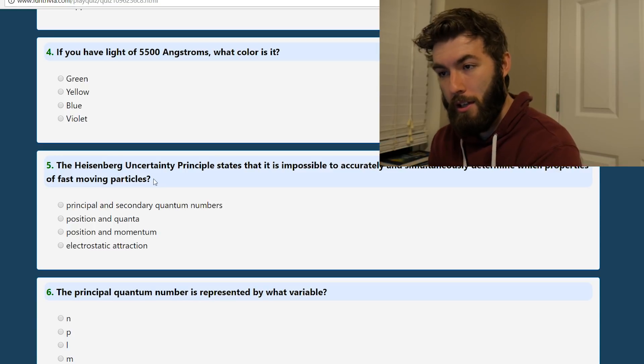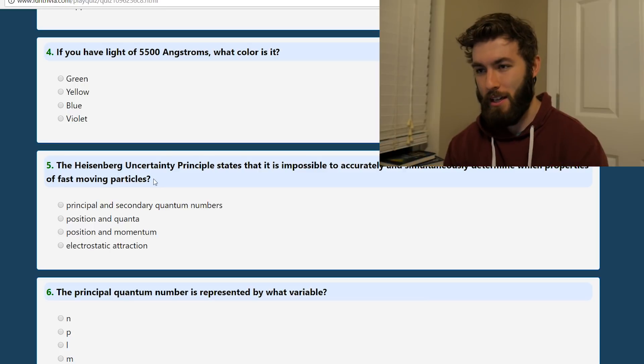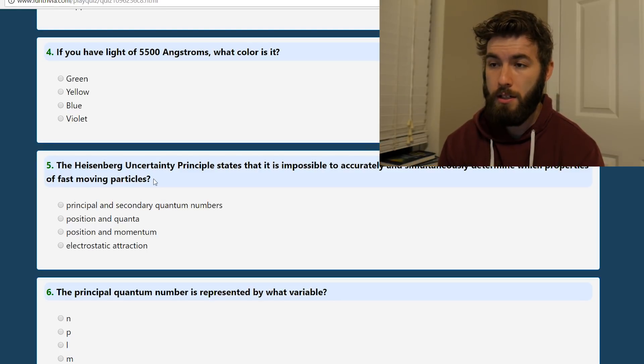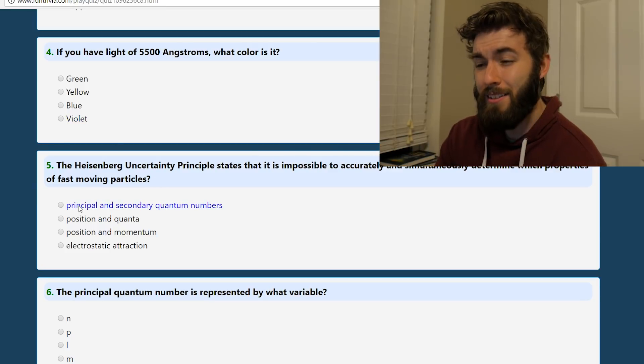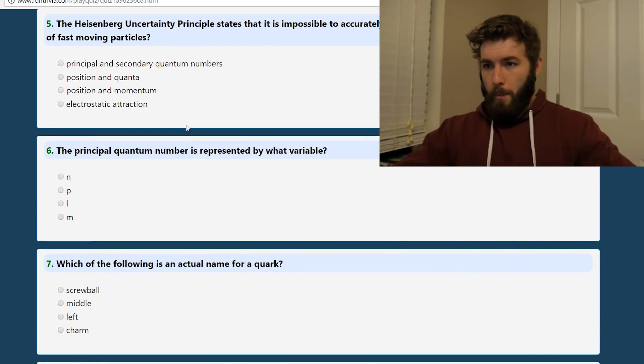If you have light of 5,500 angstroms, what color is it? Well, let's see. So an angstrom is, what is it? The size scale of an angstrom is about on the same order as the size of an atom, right? Or the radius of an atom. So that's something on the order of 10 to the minus 6. That doesn't really help me. I might have done that math wrong. That sounds kind of high, though. So I don't think it's yellow. I want to say blue. I really don't know, though. Might be the first one we got wrong.